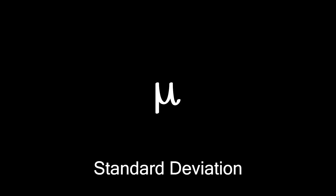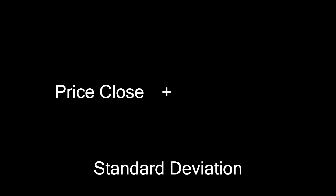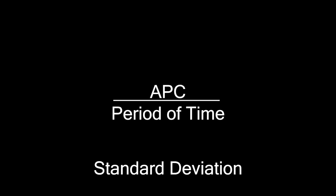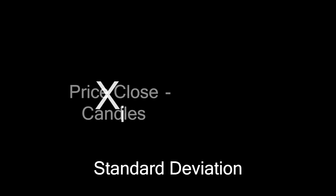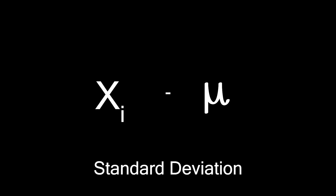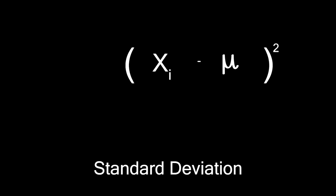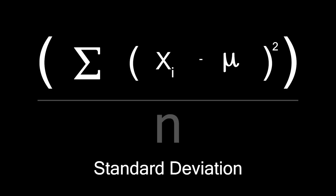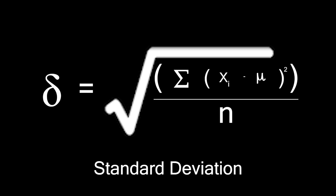For the actual calculation: the first step is finding your mu, or average. Take the price close for your period number of candles, add them all together, and divide by your period. This gives you your average price close over that set period. From there, take the price close of each individual candle and subtract the mu from it, then square that value. Next, take the summation — the capital sigma — from the most recent candle all the way to the nth candle, sum all those squared values, and divide by n to get the average. Finally, take the square root, which gives you the sigma, or standard deviation, for that specific candle.